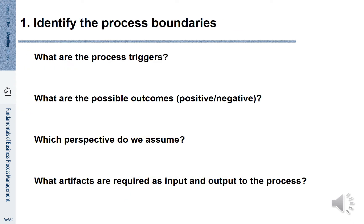When modeling the process, we first have to identify the process boundaries. We need to understand what are the triggers of the process. We also need to understand what are the possible outcomes. We also need to clarify which perspective we assume for modeling the process. And finally, what artifacts are required as input and output to the process.